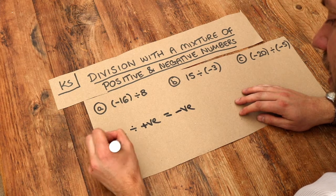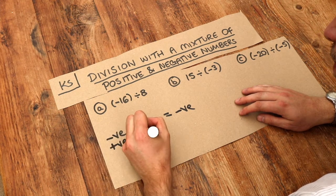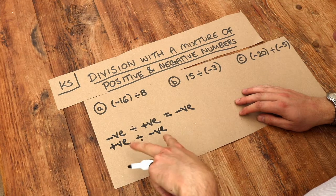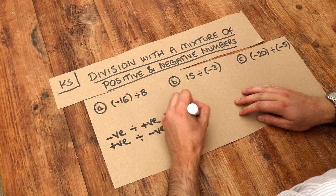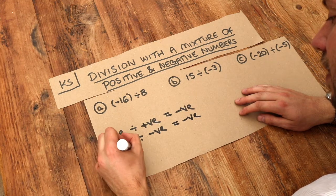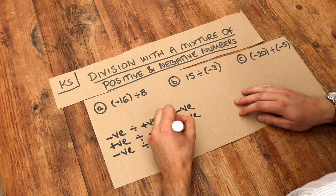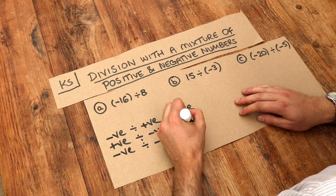If you divide a positive number by a negative number, because you've got a mixture of positive and negative, you end up with negative. But if you divide a negative number by a negative number, you end up with positive.